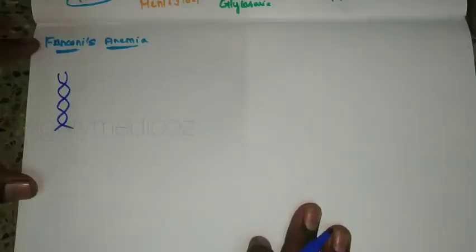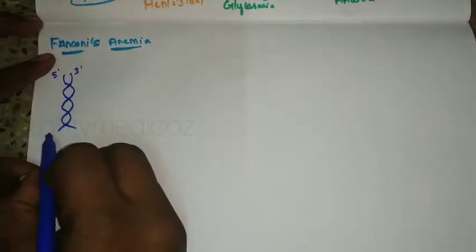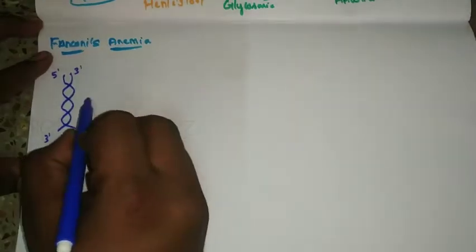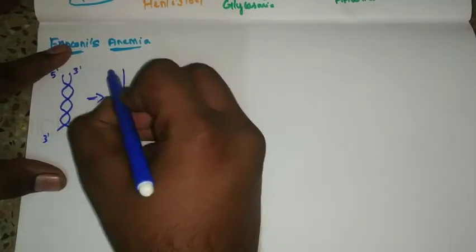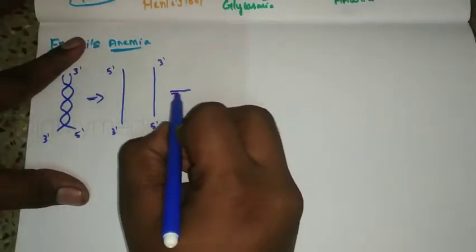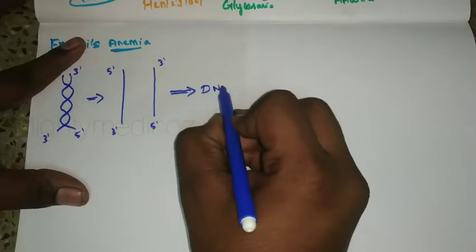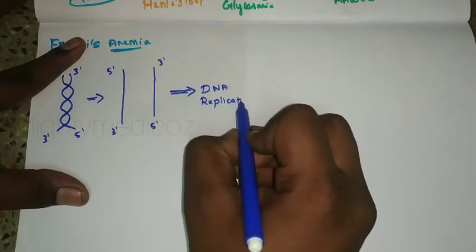In our body, there is a double-stranded DNA running in the 5'-to-3' and 3'-to-5' directions. This double-stranded DNA can undergo a process called DNA replication, where new nucleotides are added.